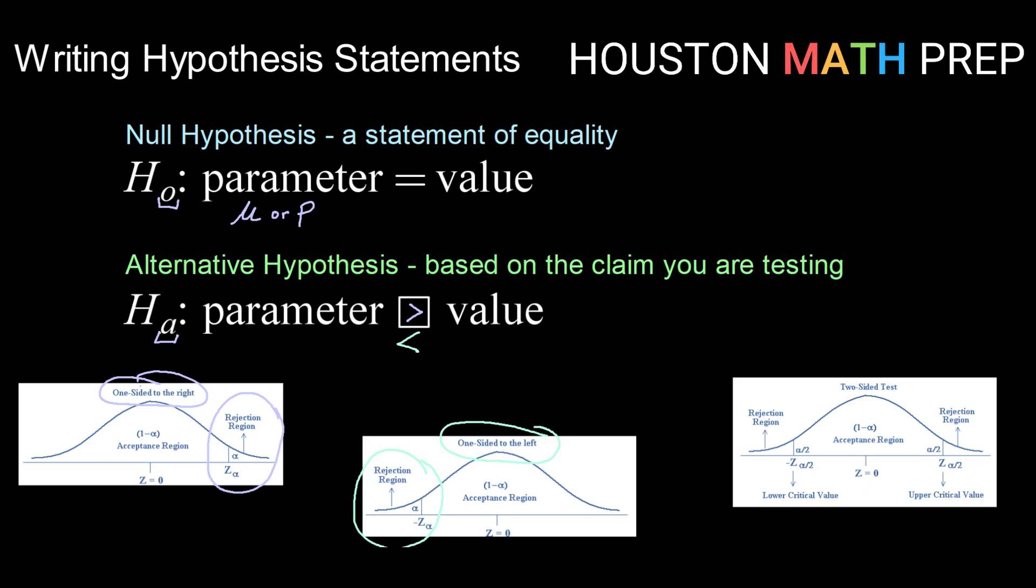The third type of alternative hypothesis we can have is a not equal to. So not equal to is a two-sided test. In that case, we might be lower than the value or we might be greater than the value. So we would actually split our rejection region and have some in the low tail and some in the high tail.